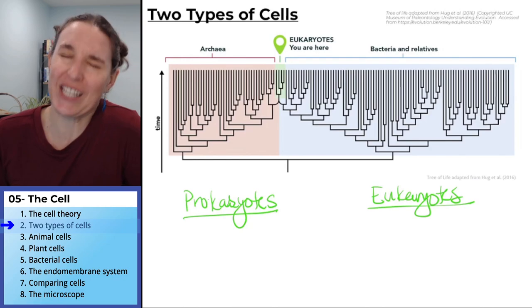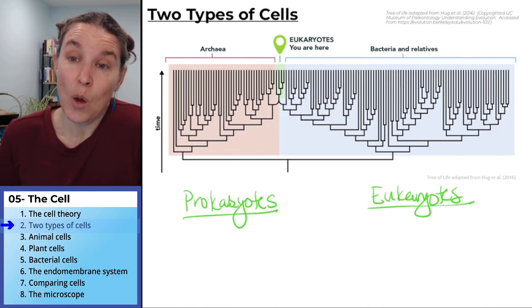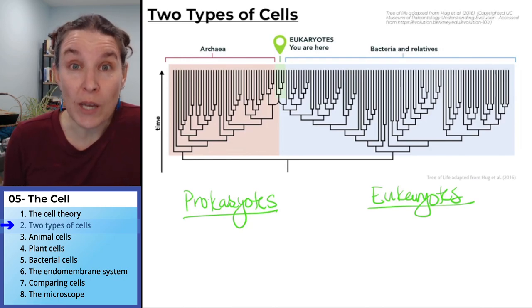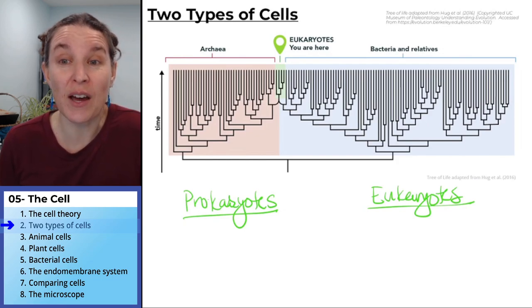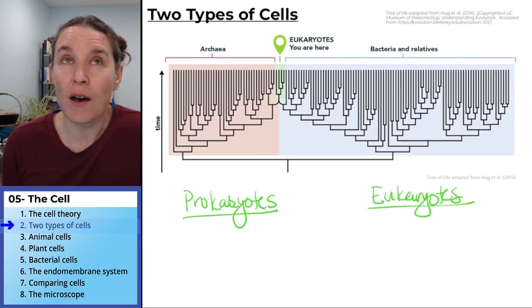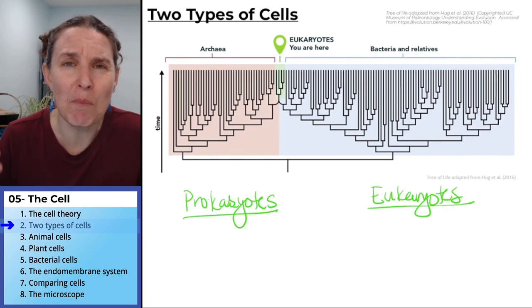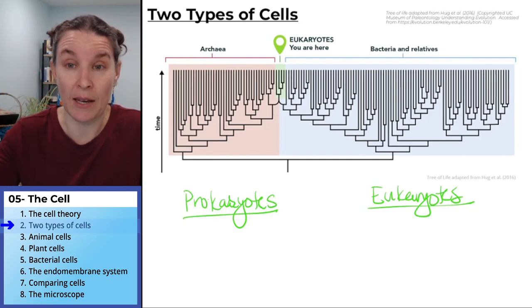And I'm showing you this picture because we are eukaryotes and when I think about a cell, I think about a eukaryotic cell. But most of, number wise, most of the critters on our planet are actually prokaryotes.